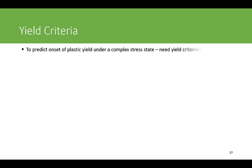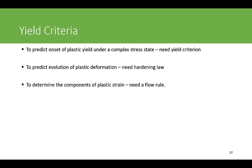When you talk about yield criteria, you use it to predict the onset of plastic yielding under a complex stress state. So you can have a very complex 3D stress state and you want to predict the onset of plastic yielding — then you need a yield criterion. Once plastic deformation has started, you can have strain hardening in the material due to dislocation motion and the interaction of different dislocations. For that you need hardening laws, and to determine the plastic components of plastic strength you need to define a flow rule.